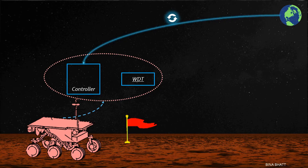So we can conclude that watchdogs are a crucial element of any embedded system, and they should be used correctly to make our systems more robust and reliable.